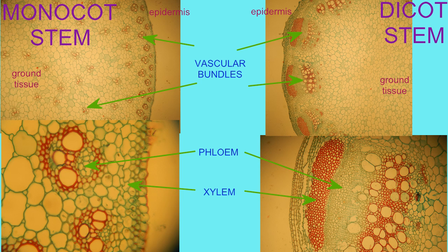The differences are that in a monocot, these vascular bundles are scattered throughout the stem, while in dicots, they form a ring.